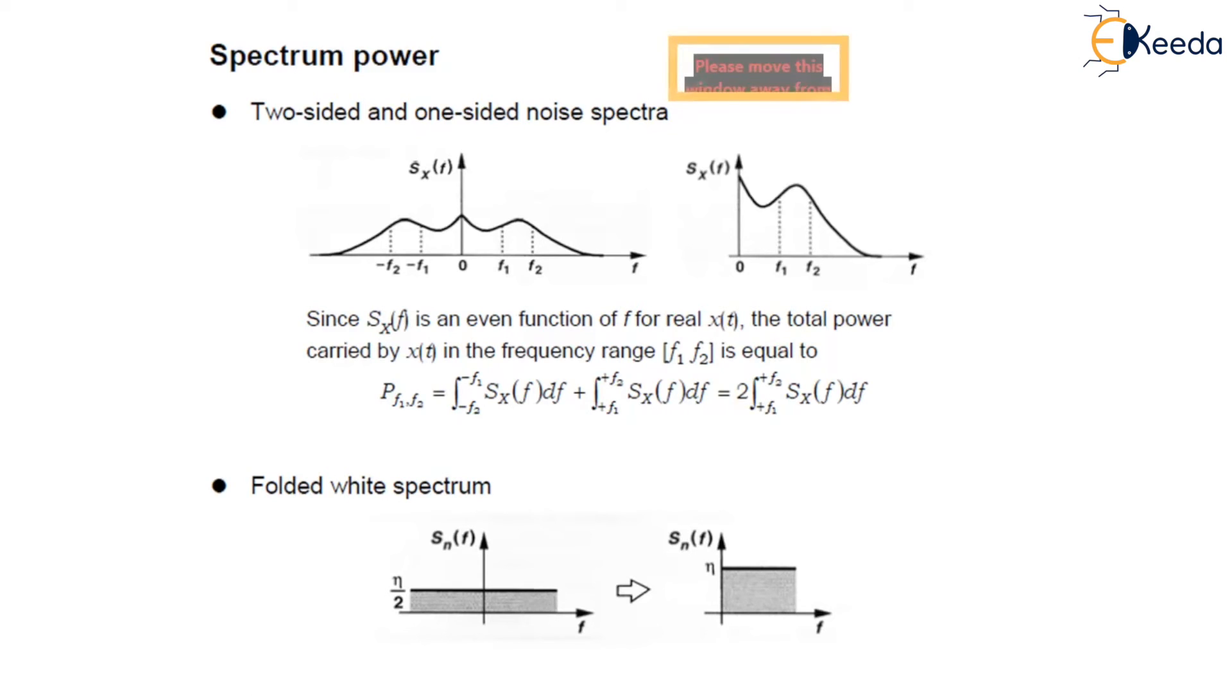I summarize here: the spectrum shows us the power carried in a small bandwidth at each frequency which reveals how fast the waveform is expected to vary in the time domain. This is all about the noise spectrum and noise shaping. In the next lecture, we will study amplitude distribution. Thank you.